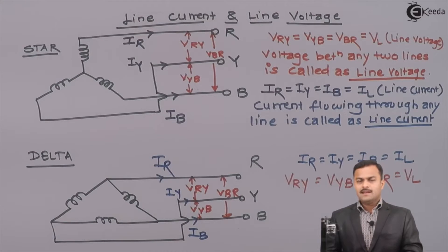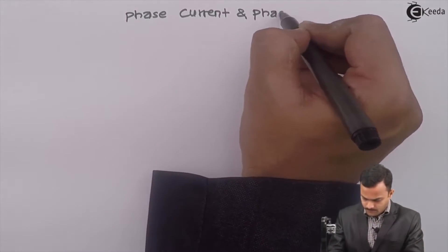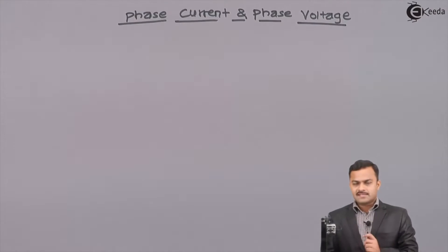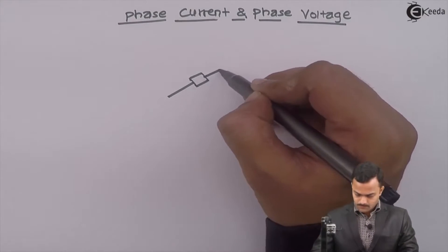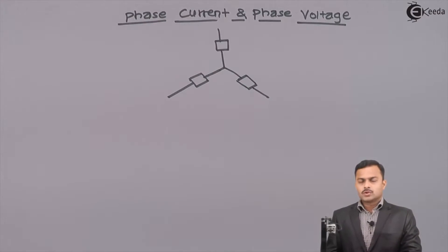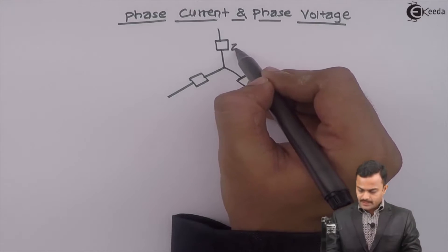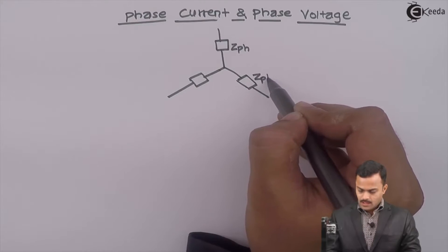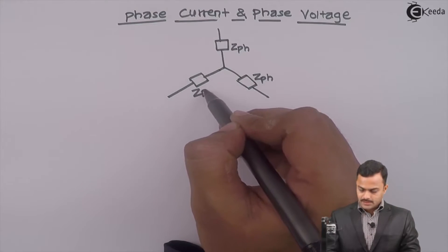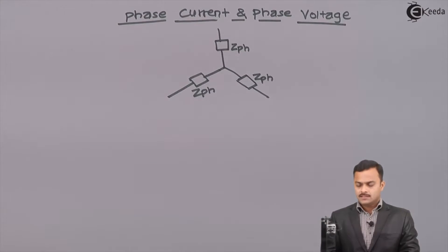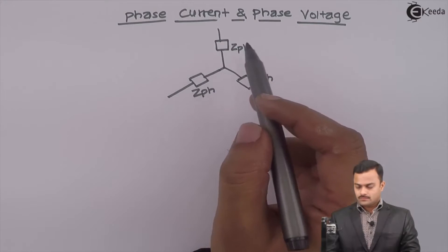Now let's discuss phase current and phase voltage. In order to define these, we consider a three-phase load. First I will consider a star connected balanced three-phase load, where the magnitude of phase impedance is the same.